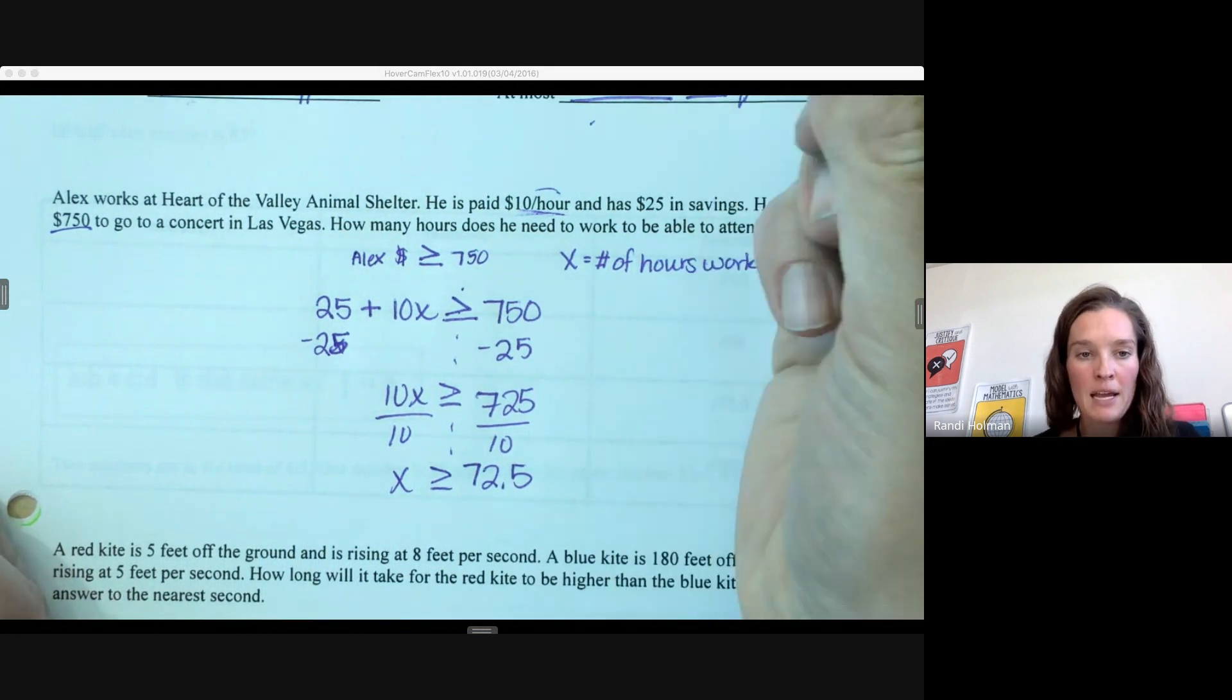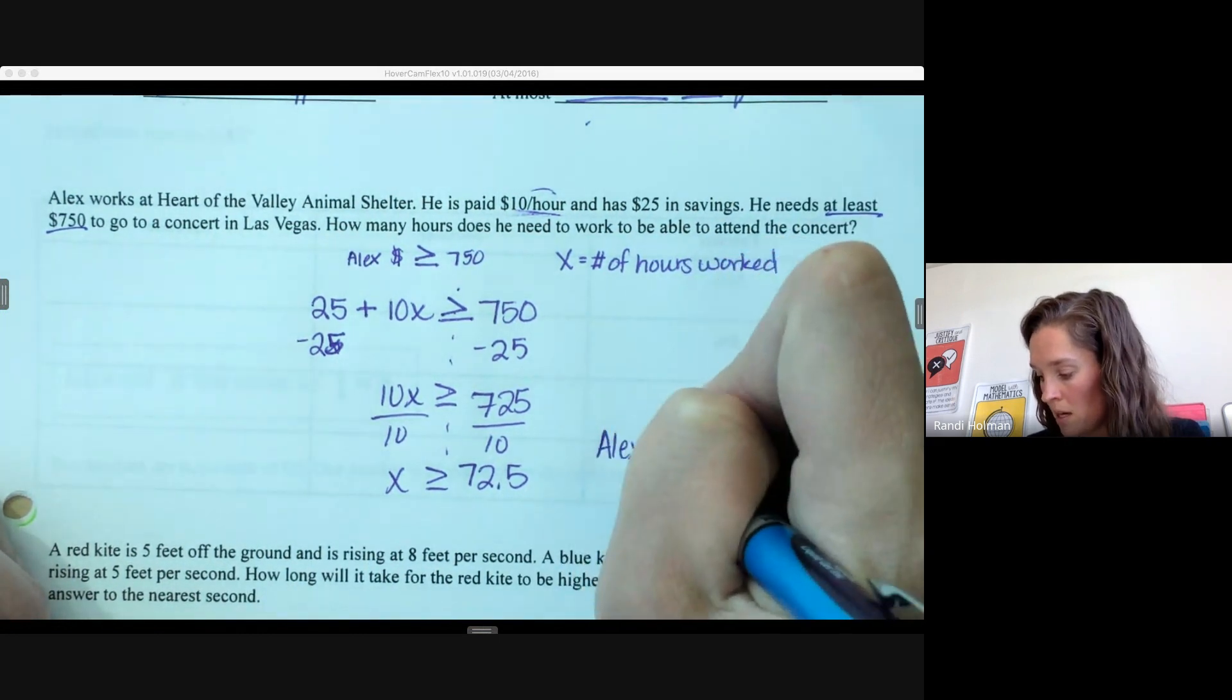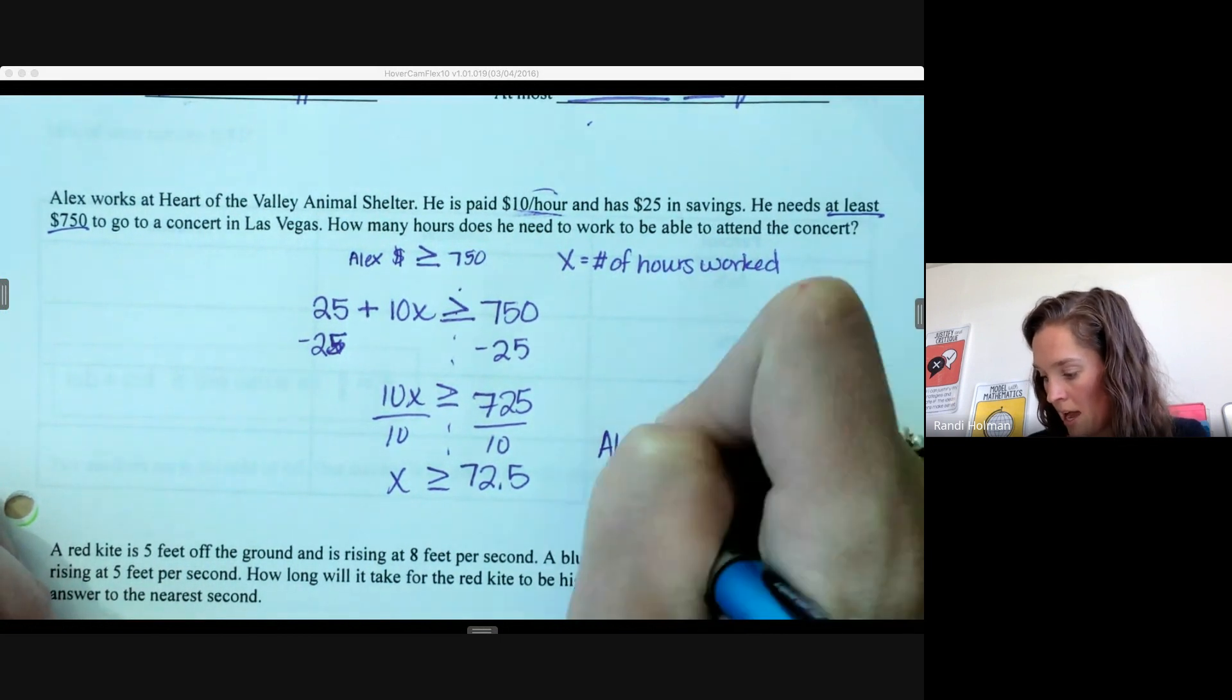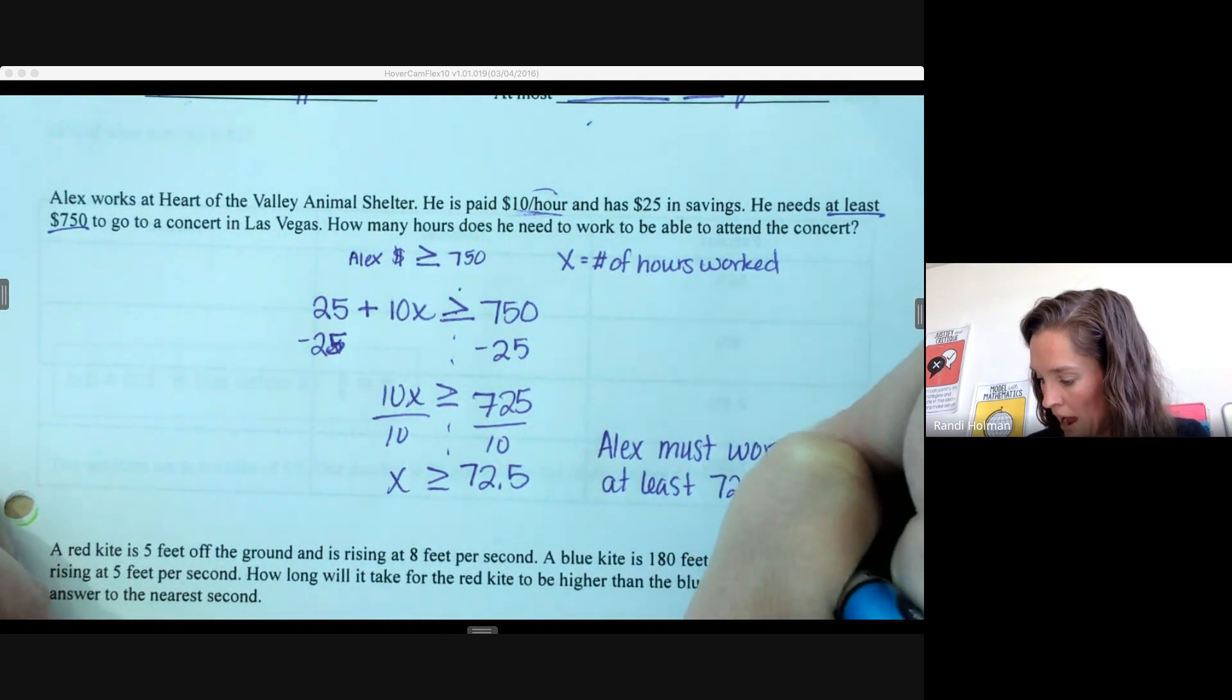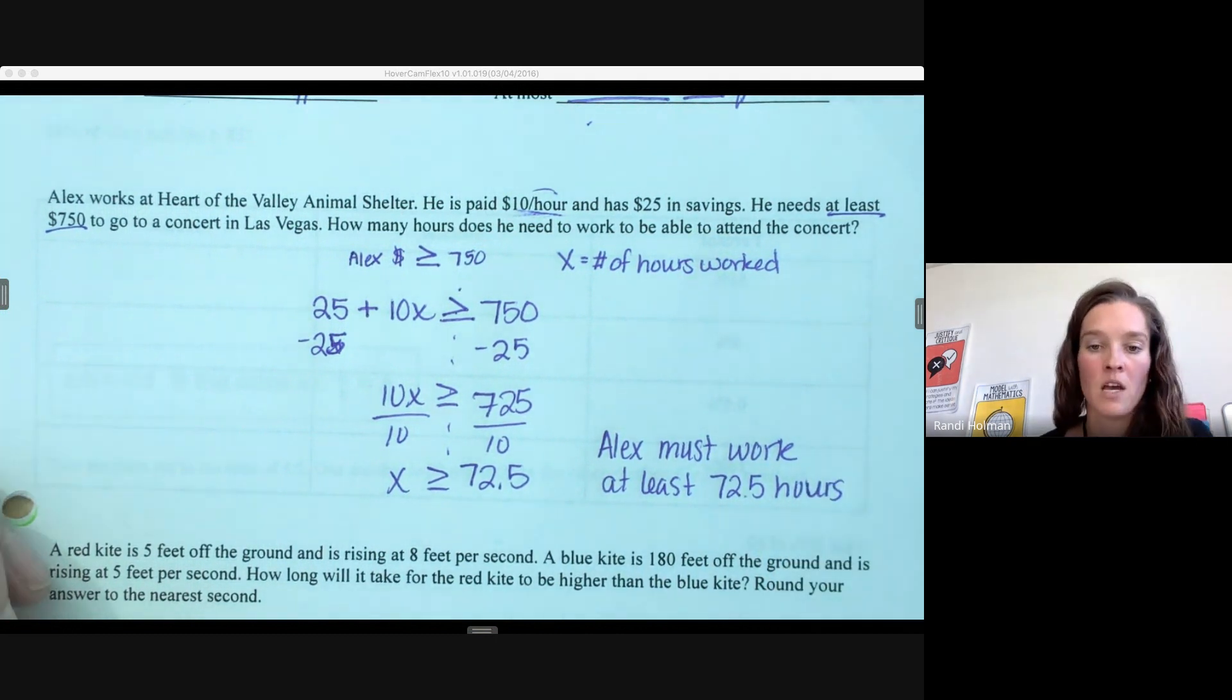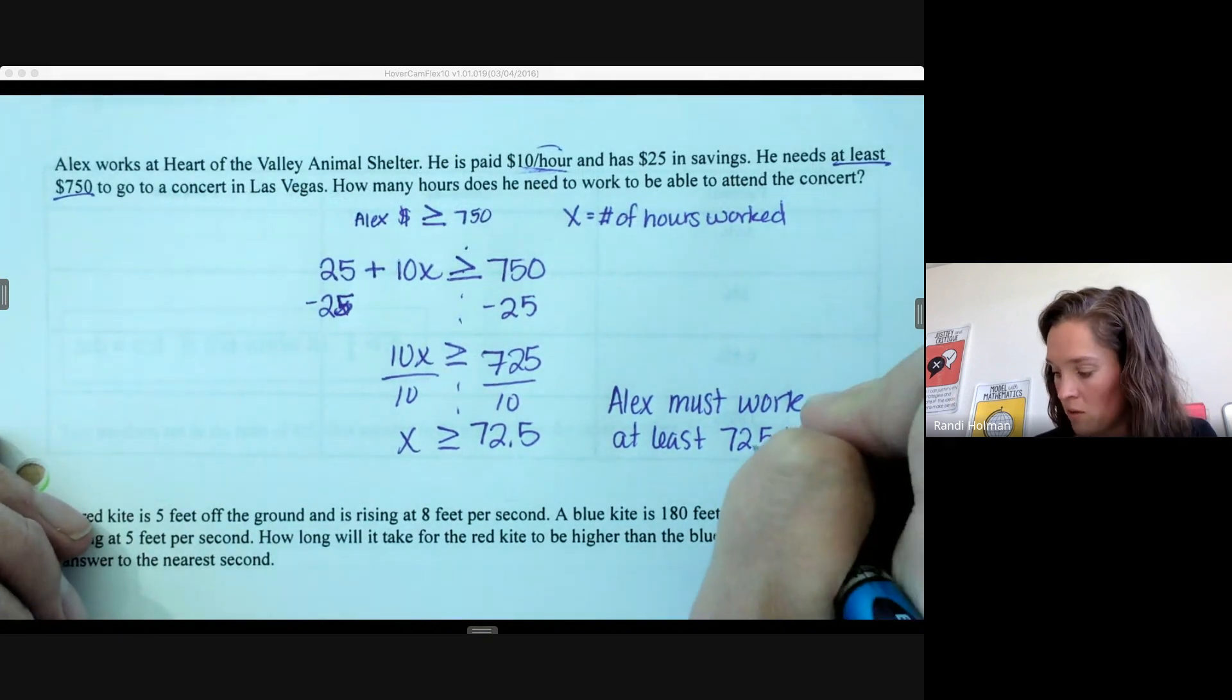What does this mean back in terms of the context? Alex must work at least 72.5 hours. He could work 73 hours, he could work 80 hours—that would be acceptable—but he has to work at least 72.5 hours.